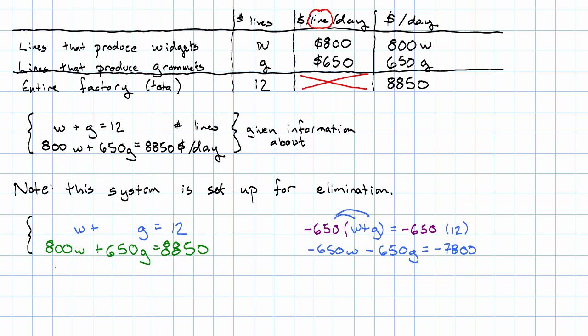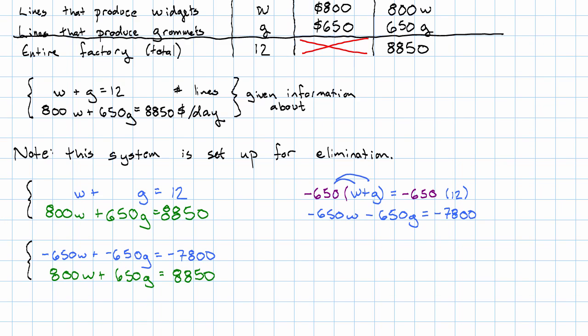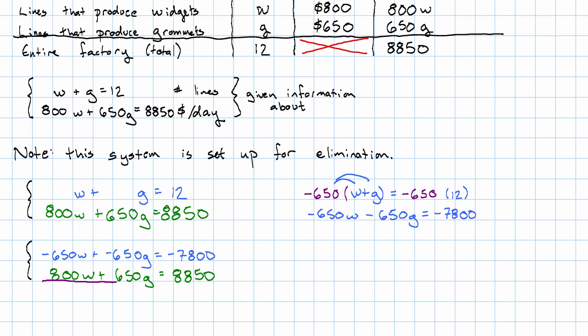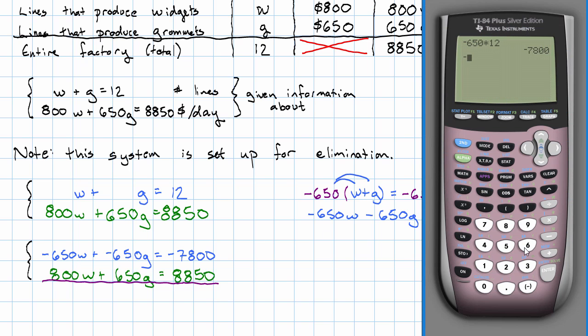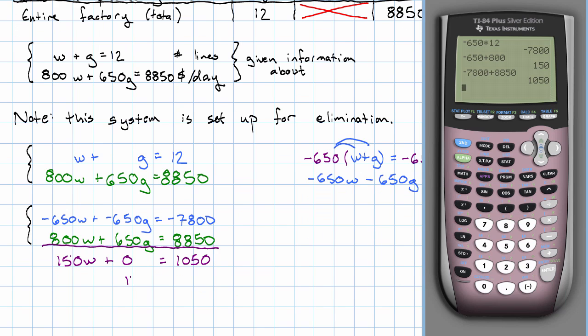So that's what our first equation becomes. We're not going to change the second equation, our system is now this system. Notice that when we add together the left hand sides and add together the right hand sides, we'll have negative 650 plus 800 is 150W plus 0 equals 1050. 150W equals 1050, divide both sides by 150, and we get W equals 7.